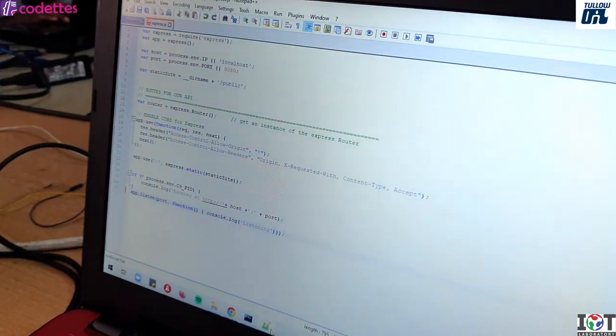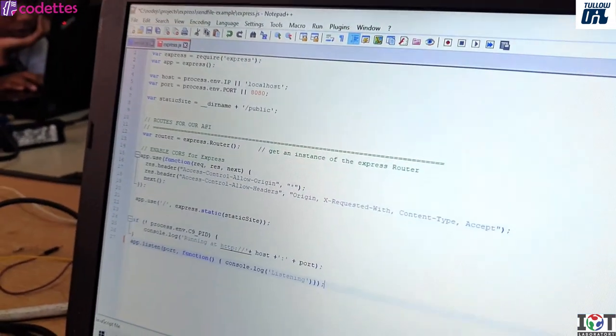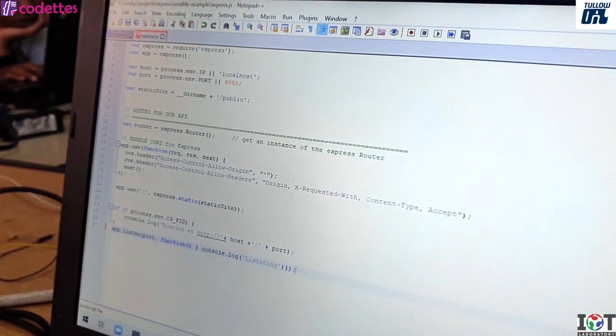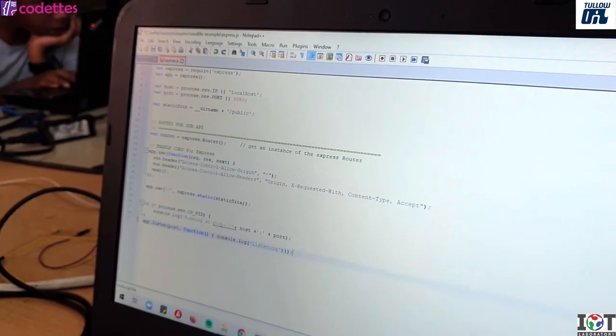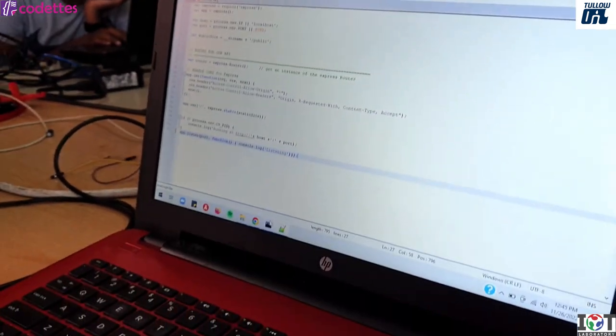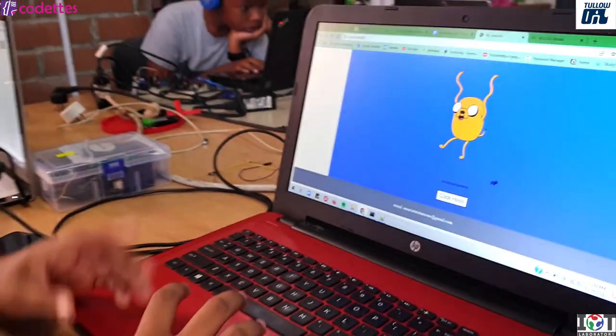And so this is the server code that I'm using. This is in JavaScript. And then what I'm going to do is I'm going to send the information from my dashboard to here, and it will process everything through Node, and it will be displayed on my web page.